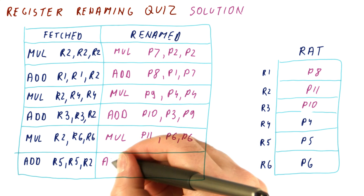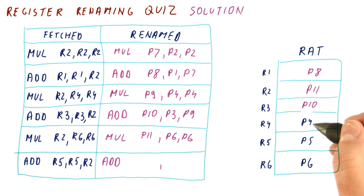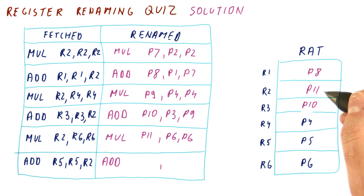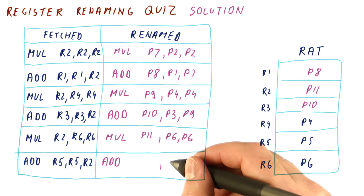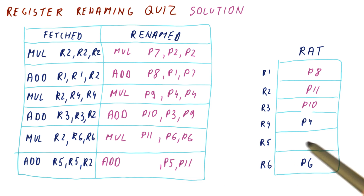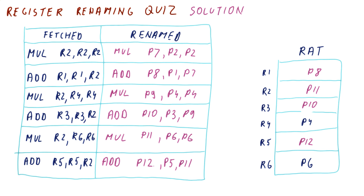Finally, we have the ADD of R5 and R2 — this is P5 and P11. It produces a result and puts it in R5, so R5 now instead of P5 becomes P12. And that's the solution to the quiz.